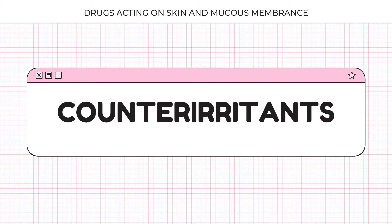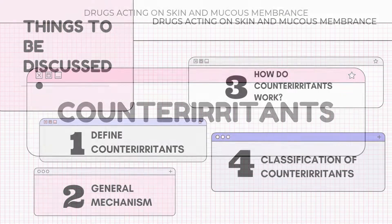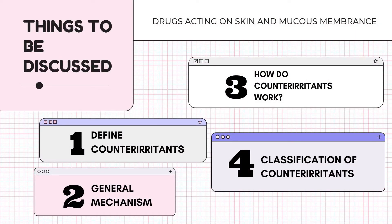Counter-irritants. In this video, here are the things to be discussed. First is to define counter-irritants. Second, the general mechanisms of counter-irritants will be discussed. Third, how counter-irritants work. And lastly, the classifications and examples of counter-irritants.